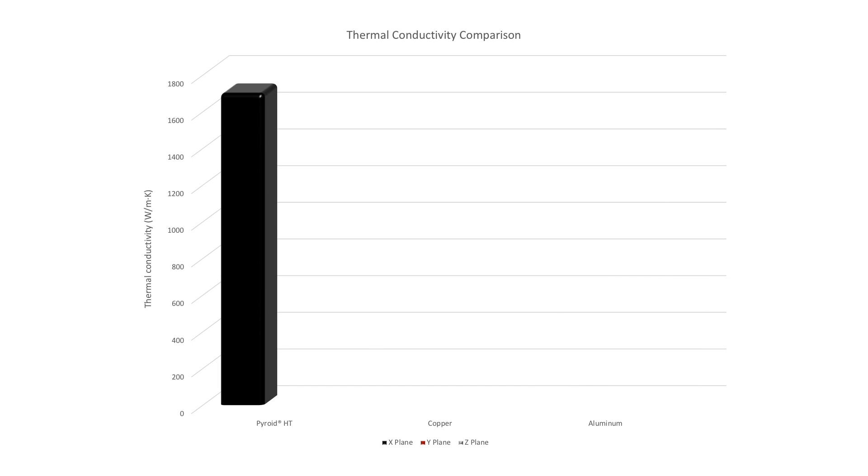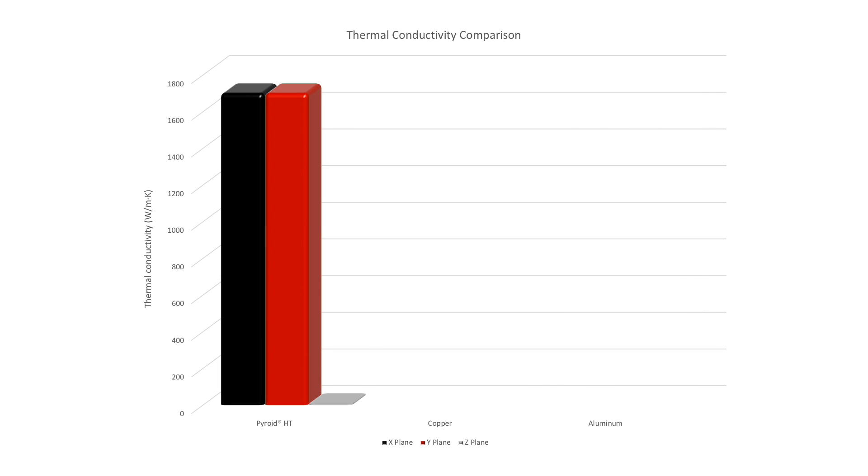Pyroid-HT has some very specific material properties which set it apart from the competition. First and foremost, it offers a thermal conductivity of 1700 watts per meter Kelvin, which is four times greater than copper.